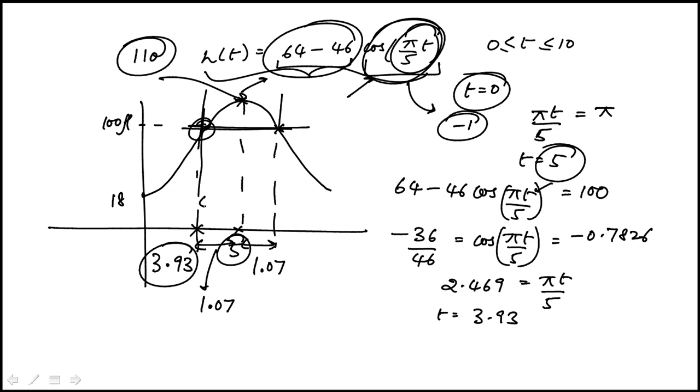So the total time would be twice that number. So 2 times 1.07, which is 2.14 minutes. And that's the answer.